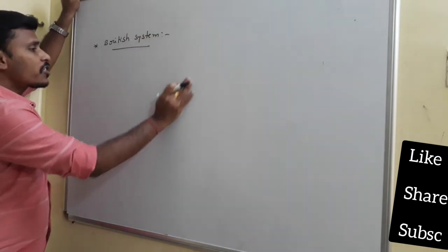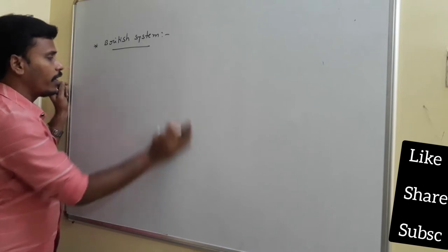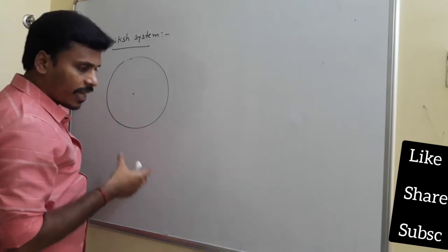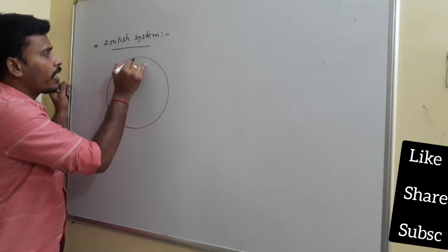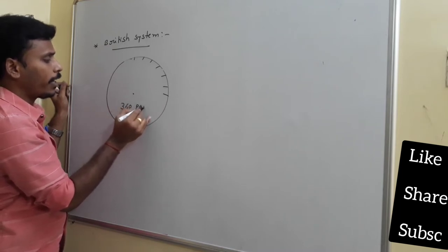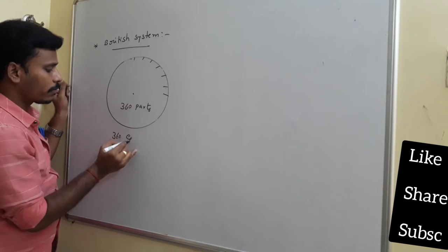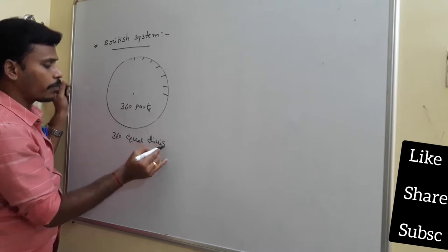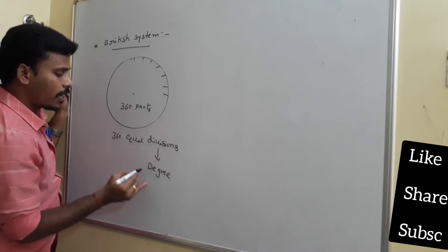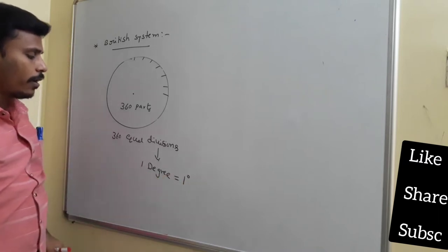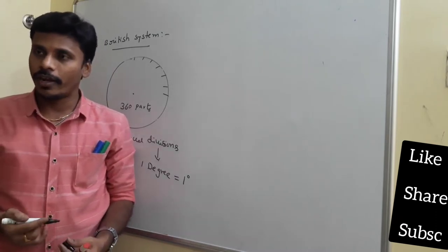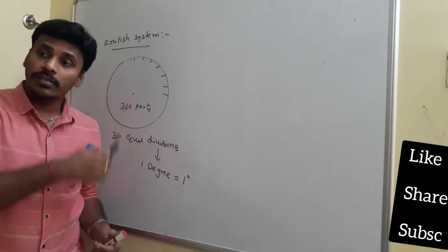What the Britishers did — instead of drawing a circle and measuring the arc length, they took a well-prepared circular disc and divided it into 360 equal divisions. They named each division as 1 degree, denoted by a small superscript zero. They divided the circular disc into 360 equal parts. Why 360? That was just their idea. The French people divided the total circle into 400 parts.